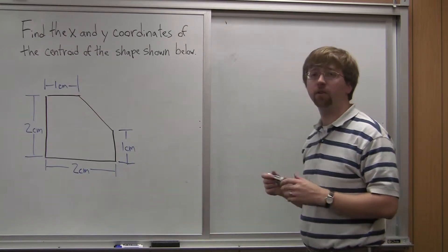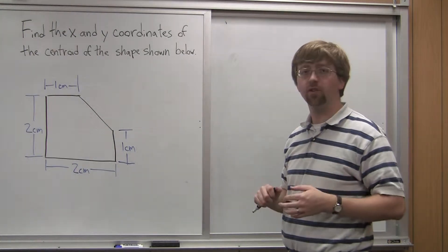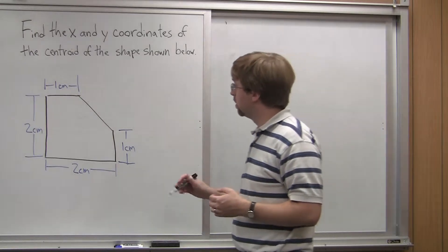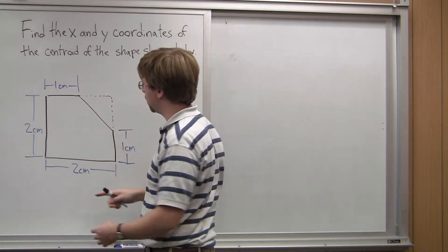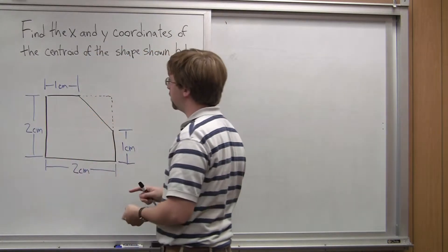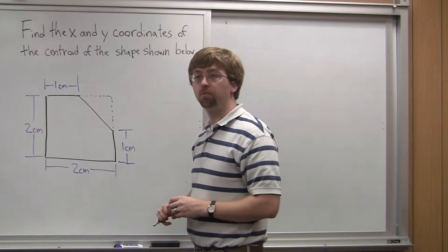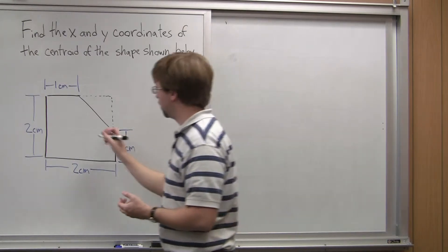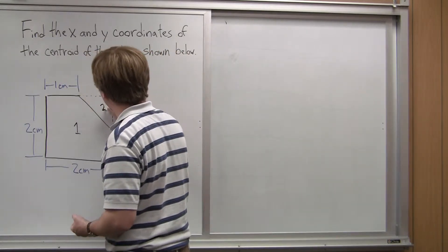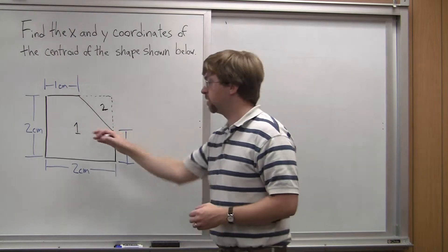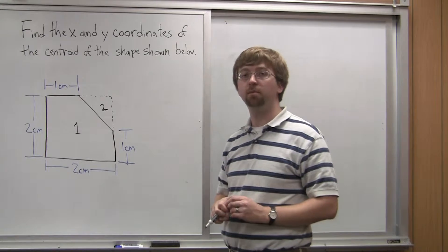When we're finding this, we first need to break it down into separate shapes. The shortest strategy is going to be to break this down into two shapes. Shape one is going to be the overall square that was originally two centimeters by two centimeters, and we're going to cut off one corner — that's the cutout. Shape one is a positive area, and shape two is this triangular cutout, which is a negative area.